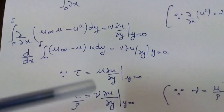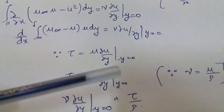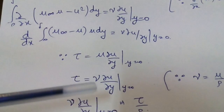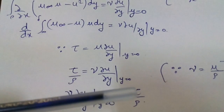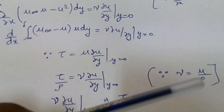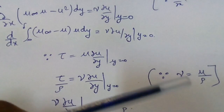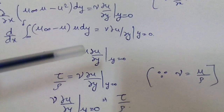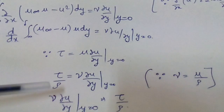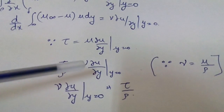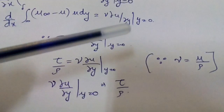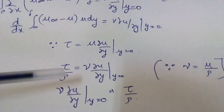Since tau equals mu del u by del y at y equal to 0, and nu equals mu by rho, we get tau by rho equals nu del u by del y at y equal to 0. So the right-hand side can be substituted as tau by rho. Here tau is the wall shear stress (tau nought) at y equal to 0.